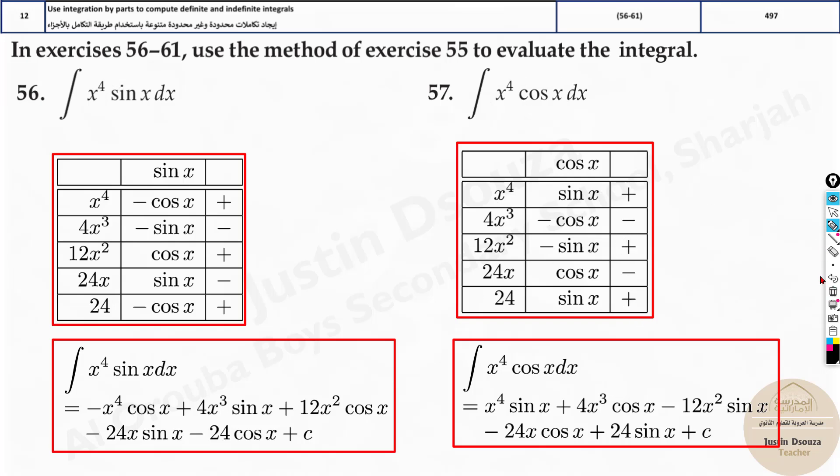Now, you just write all these terms together. The first term would be this one. It's positive x power four sine x. Next is, minus times minus. It will be positive again, 4 x cubed cos x. Minus is only one, so write minus 12 x squared sine x. Next one is minus 24 cos x, 24 x cos x and 24 sine x. Don't forget to write plus c only once. We write at the end. This is the actual method to solve by integration by parts.